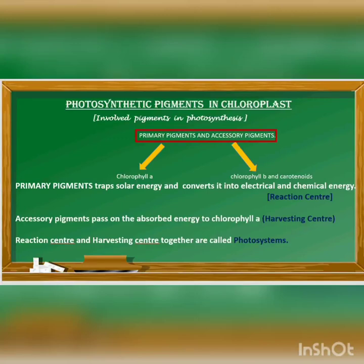These pigments are found in the chloroplast. The pigments are of two types: primary pigment and accessory pigment. Chlorophyll a is the primary pigment; chlorophyll b and carotenoids are the accessory pigments. The primary pigment, chlorophyll a, traps solar energy and converts it into electrical and chemical energy.